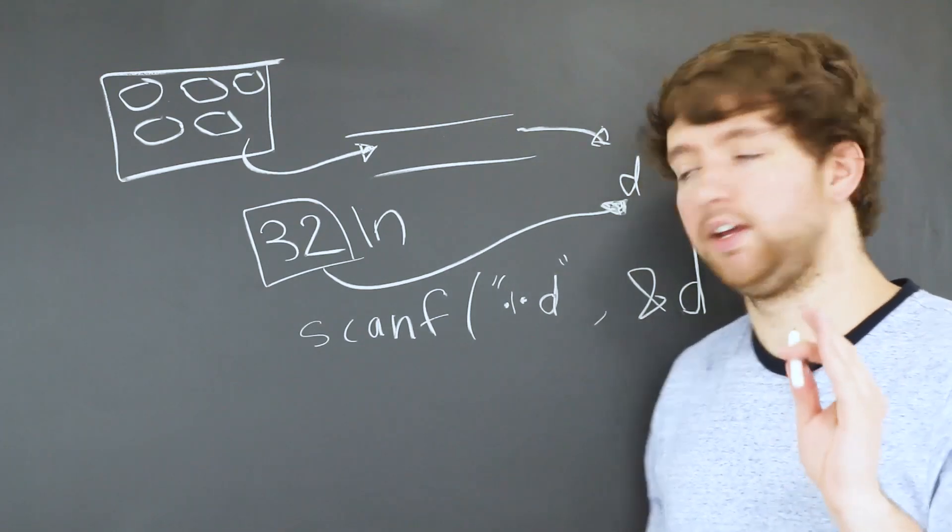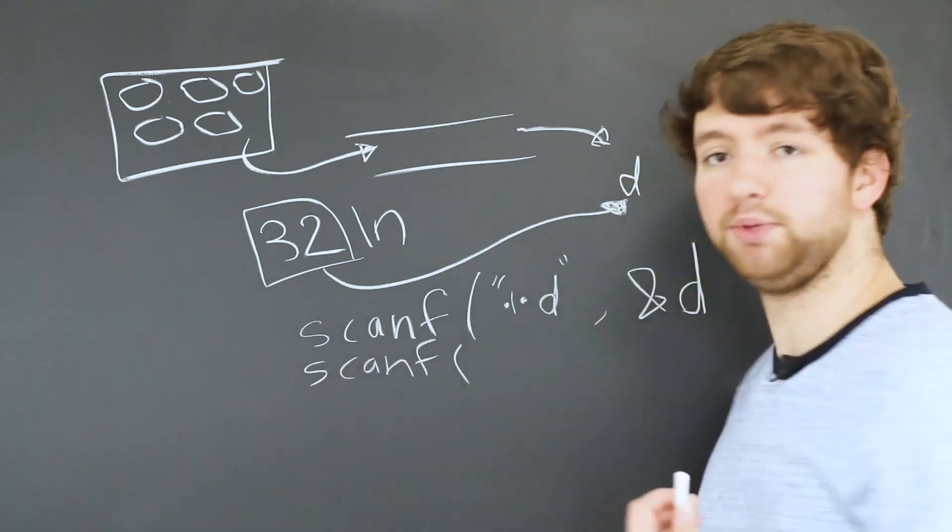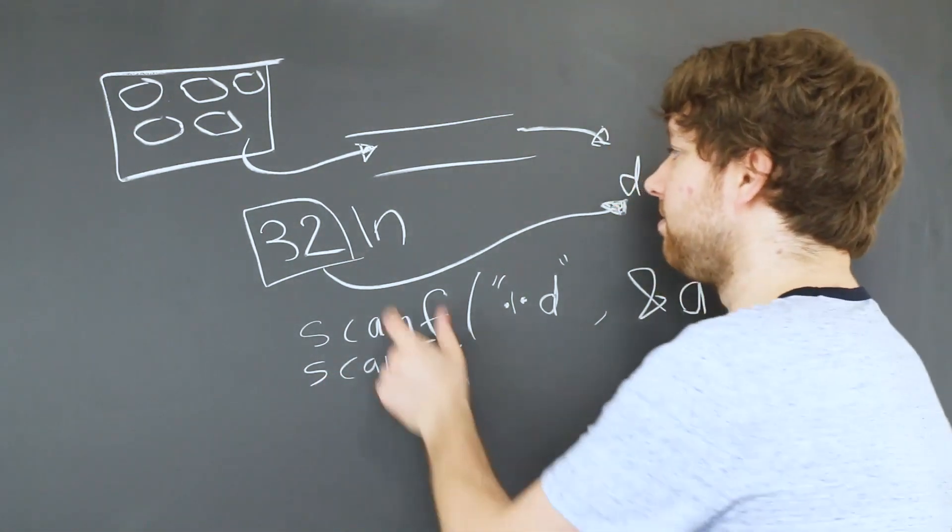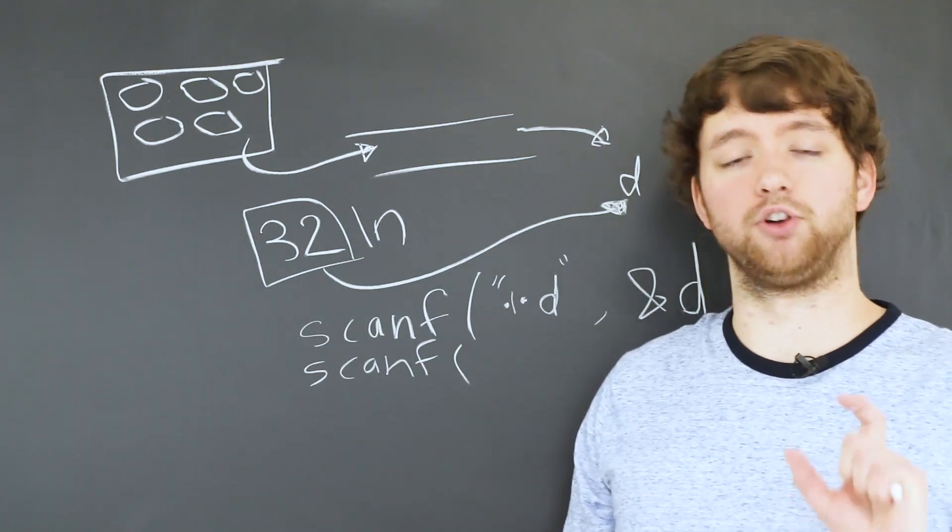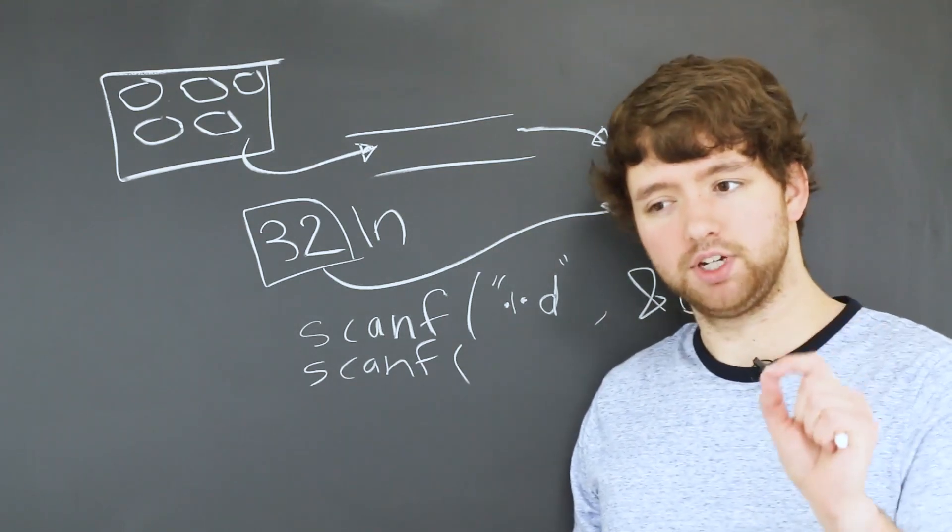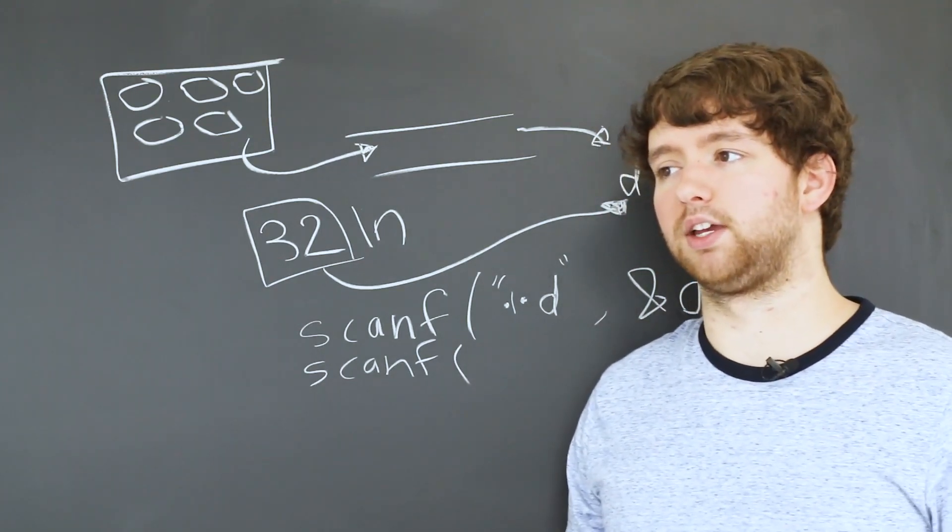So what that means is if we do another scanf, there's a possibility it might just grab this newline character and it's not going to ask the user for more input. And this is really annoying and really confusing because it doesn't happen all of the time. And this is what I'm saying. This is like, why the heck does it have to be so complicated?